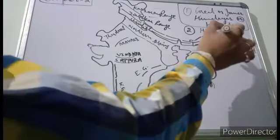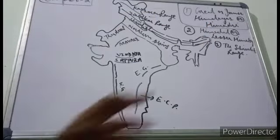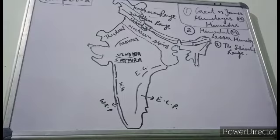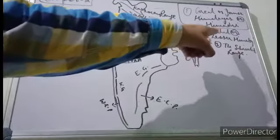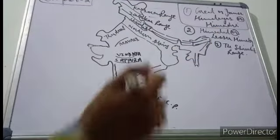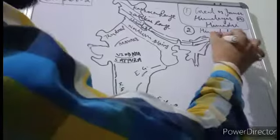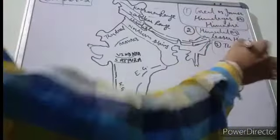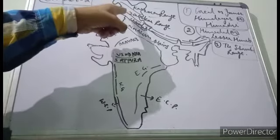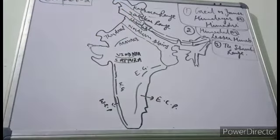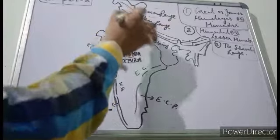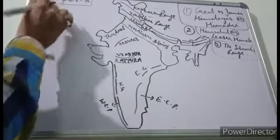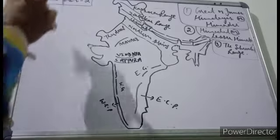The second type is the Himachal Range or Lesser Himalayas. These are not so high, and ranges like the Pir Panjal Range fall in this category. The third type is the Shivalik Ranges — those ranges that border the Punjab and Himachal regions. So this was the first physical feature of India: the Himalayas.